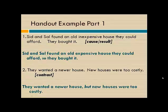You can also direct students to the informational part of the handout, which will be the first page, where it lists the different coordinating conjunctions and the relationships that each conjunction shows. For example: 'They wanted a newer house. New houses were too costly.' There's a contrast here — this is what they wanted, but this was their reality. So we could write: 'They wanted a newer house, but new houses were too costly.'